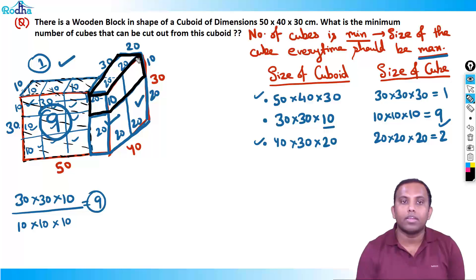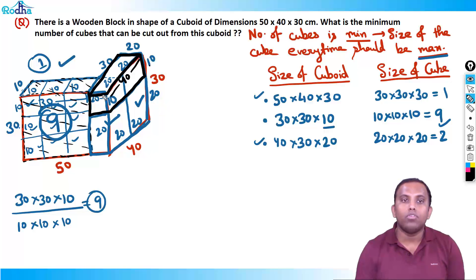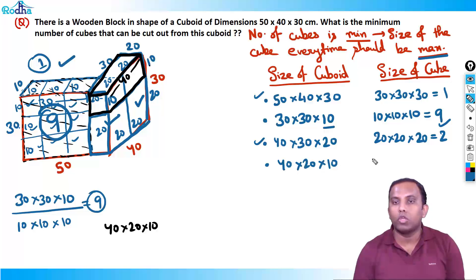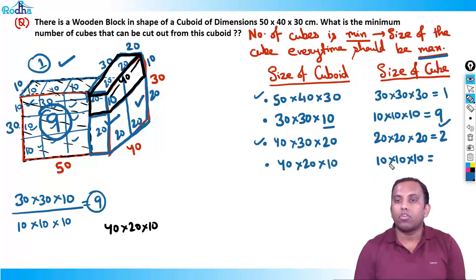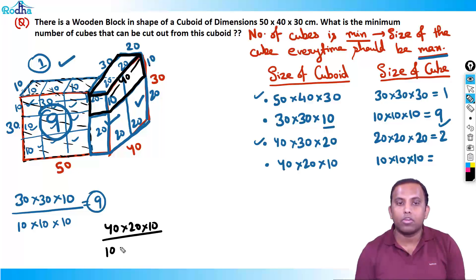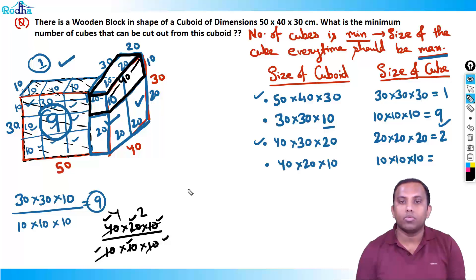From a 40 × 20 × 10 cuboid, the maximum cube size is 10 × 10 × 10. Now check divisibility: 40 ÷ 10 = 4, 20 ÷ 10 = 2, 10 ÷ 10 = 1 — each term is divisible by 10. So I can apply the direct division method here. How many cubes? 4 × 2 × 1 = 8 cubes of 10 × 10 × 10.